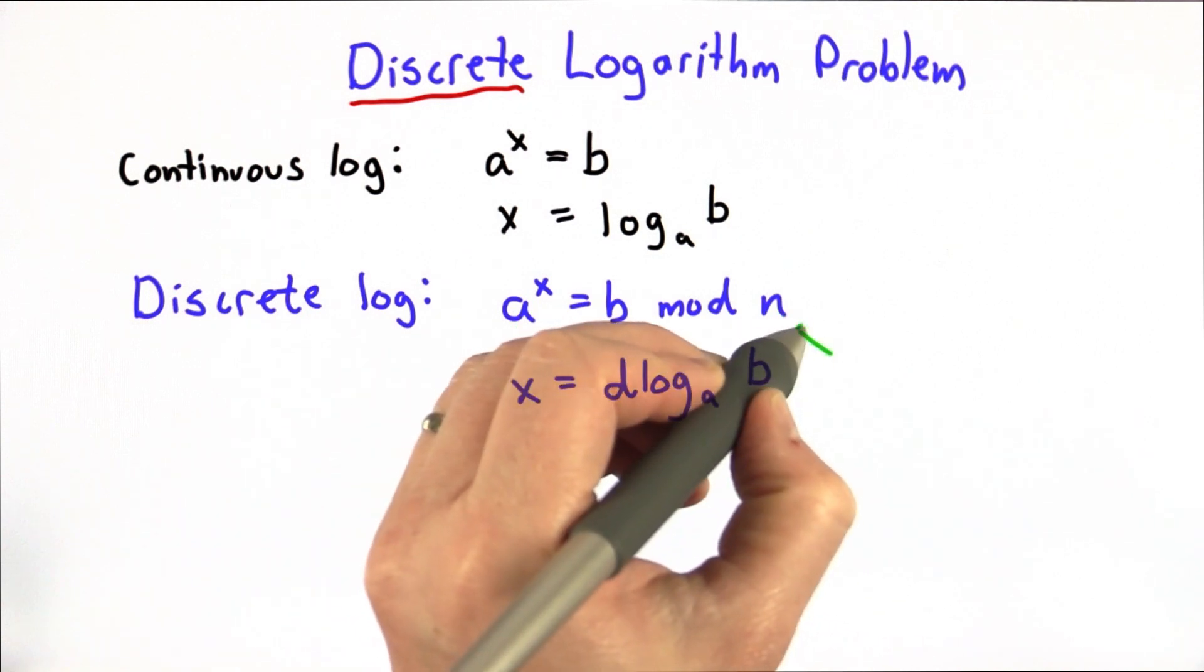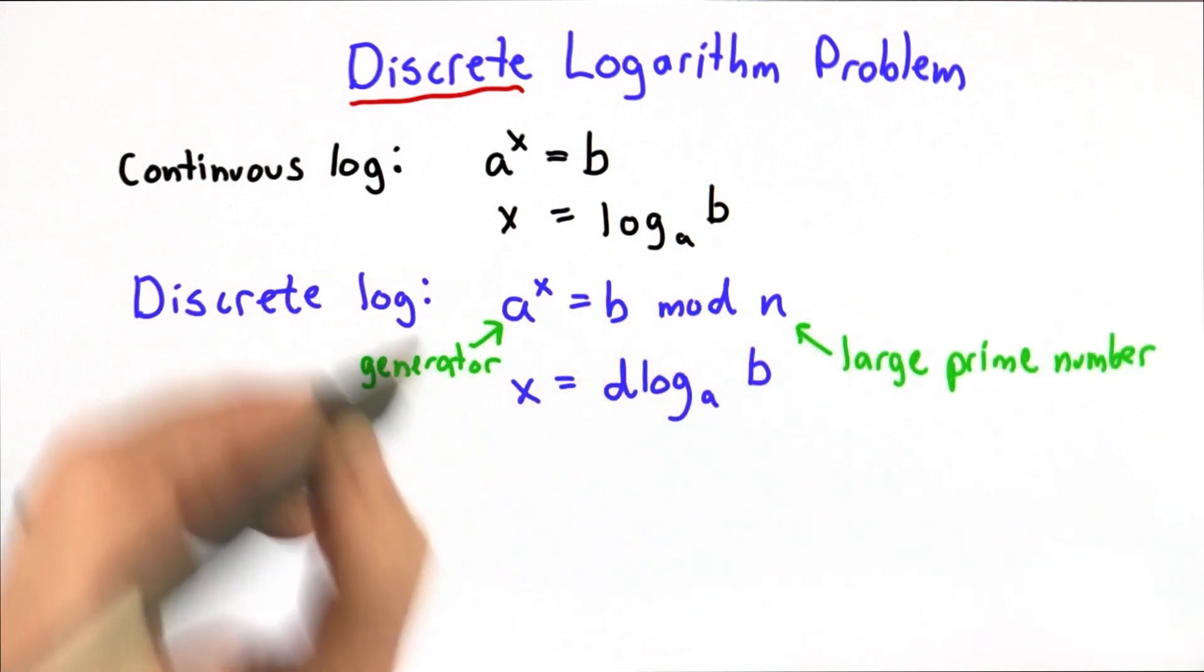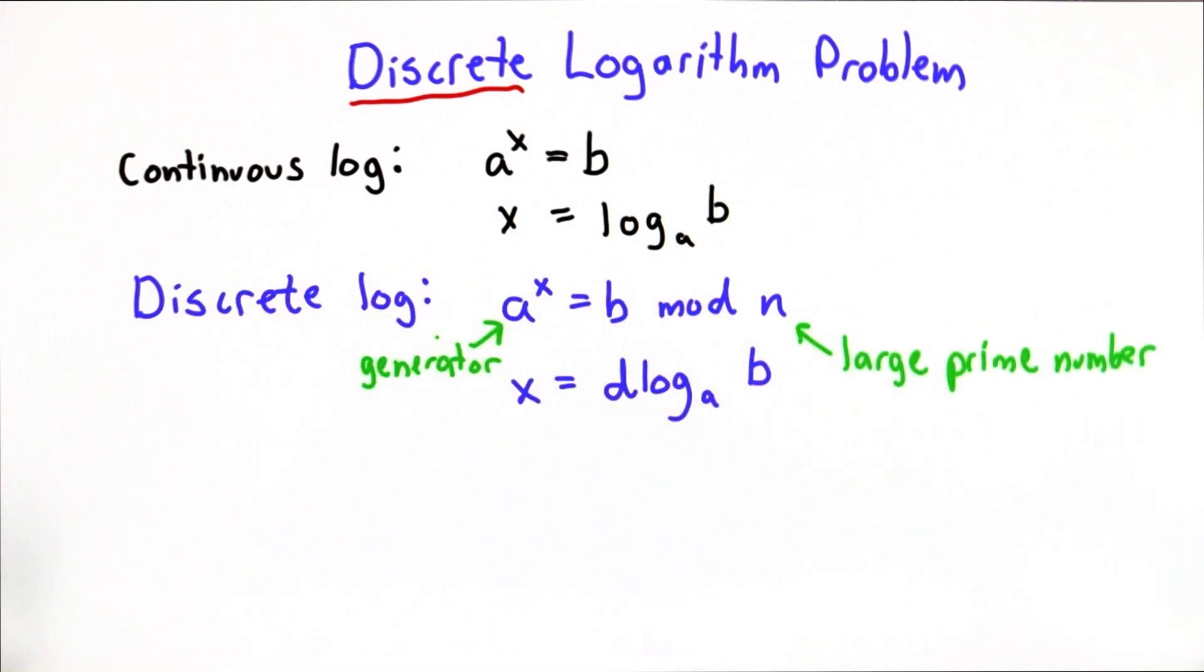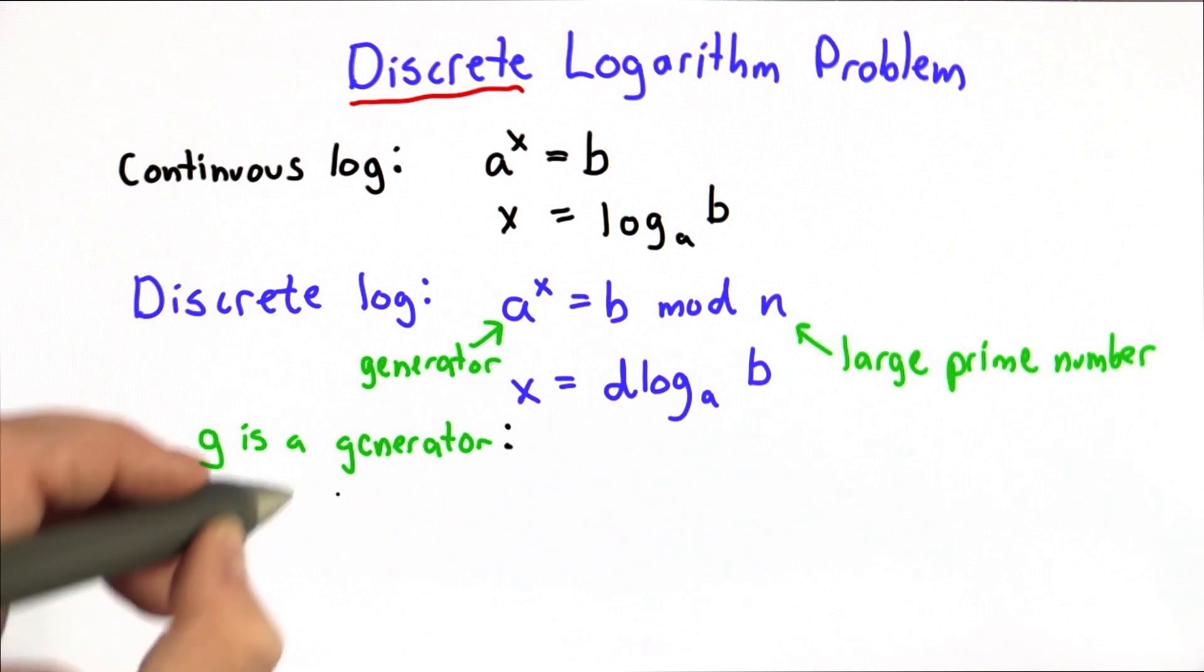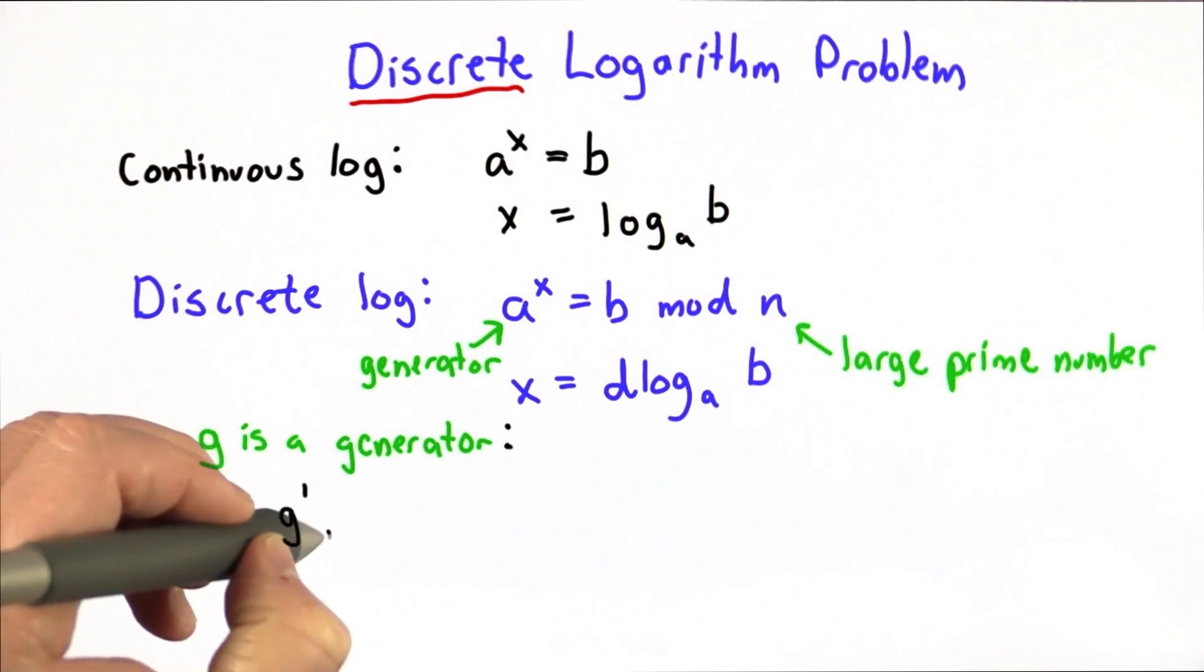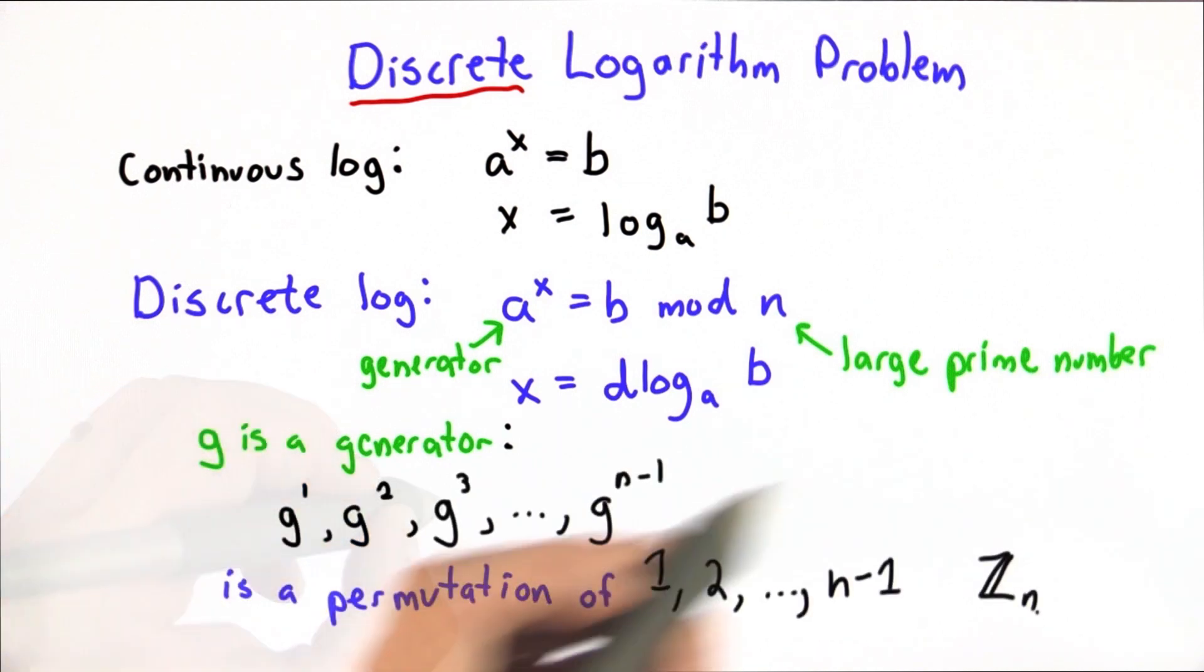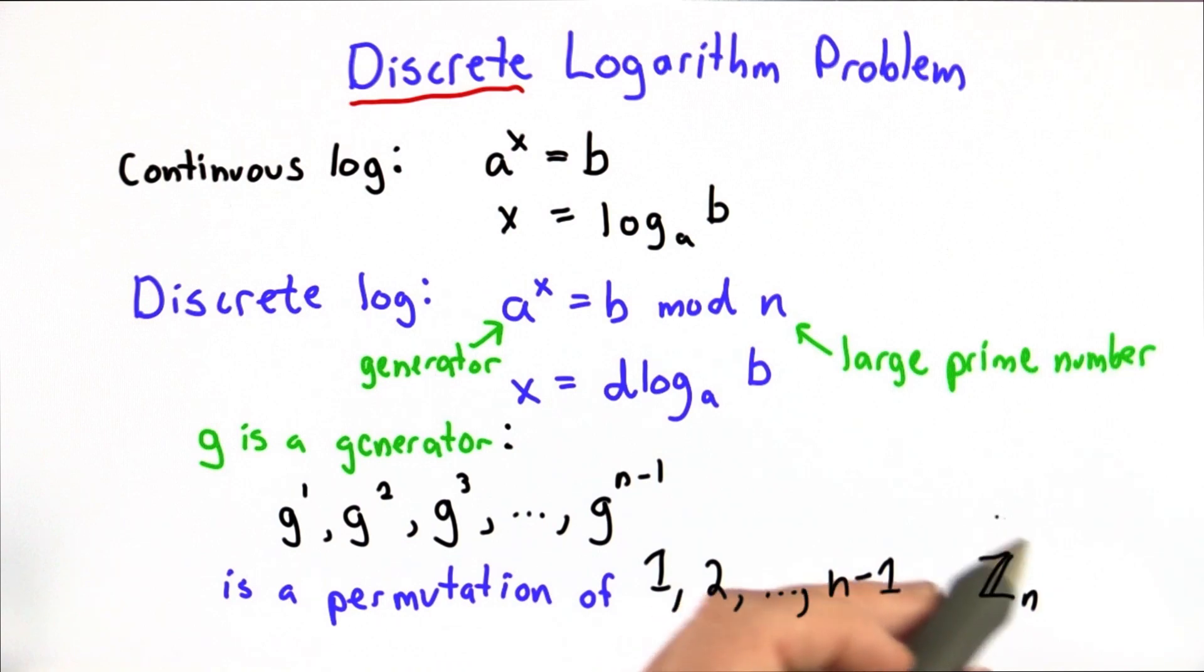But if we choose n as a large prime number and a as a generator, well then by definition, it must exist. What it means for a number to be a generator is that if we raise g to each power, what we get is a permutation of the numbers in the group Zn.